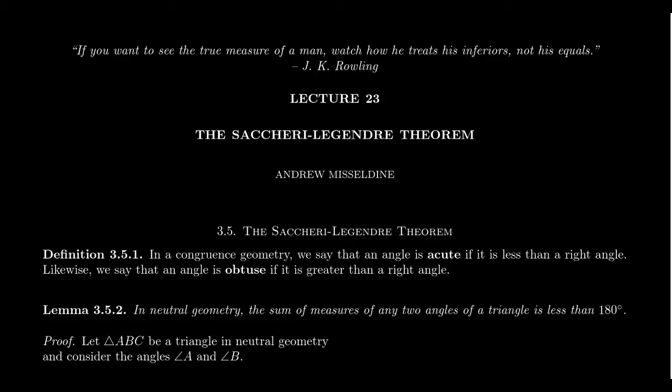For such triangles with multiple right angles or obtuse angles, they can actually exist — but not in a congruence geometry. For example, we've seen a triple right triangle inside elliptic geometry, and it's allowed there because we don't have the betweenness axioms. In a congruence geometry we need all the axioms — incidence, betweenness, and congruence — so things can fall apart if we leave that setting, as in elliptic geometry.